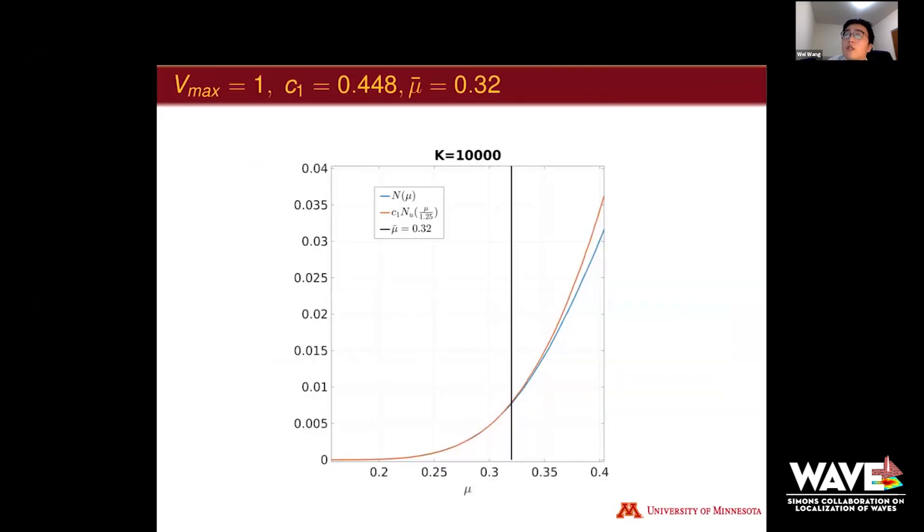Let me show some numerical evidence. I first show a basic one. I choose V_max 1, c1 is 0.448, and the energy level μ_bar is 0.32. We find that based on this scaling constant, the box counting matches the true counting very well. In this figure, we have three lines. The red line is the scaled box counting, the blue line is the true counting, and we plot a third reference line, a vertical black line marking the energy level μ_bar. We find that on the left of this line, the scaled box counting matches the true counting very well. After that, it has some difference gradually. We can call this range the effective energy level.